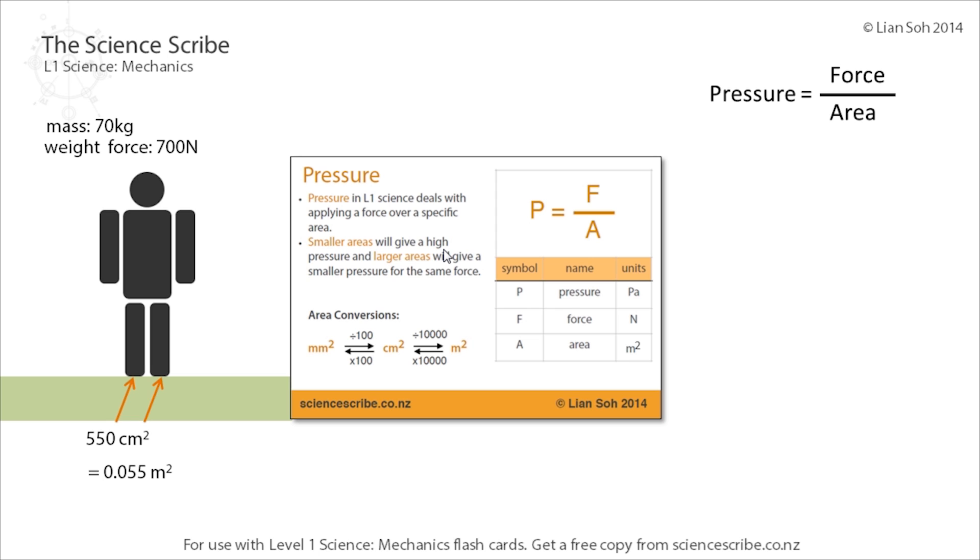So applying the formula P equals F over A, we've got the force weight of 700 newtons (not 70 kg—70 kg is his mass) divided by the area in meters squared, which gives you 12,727 pascals. Don't forget to stick your units in; physics is really big on units.